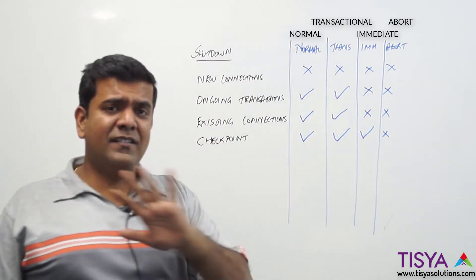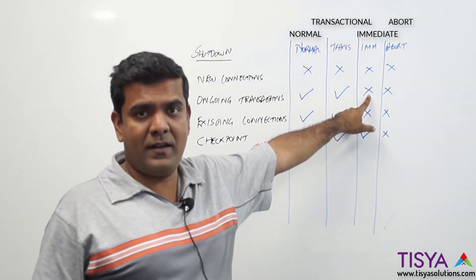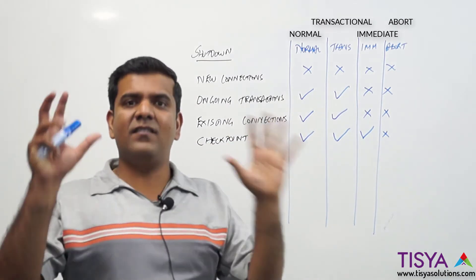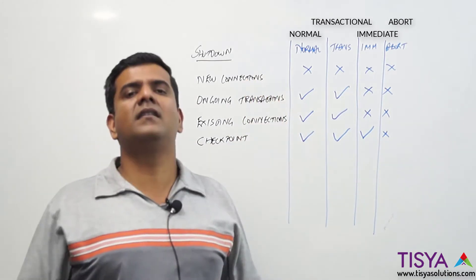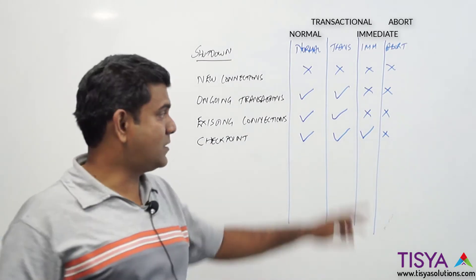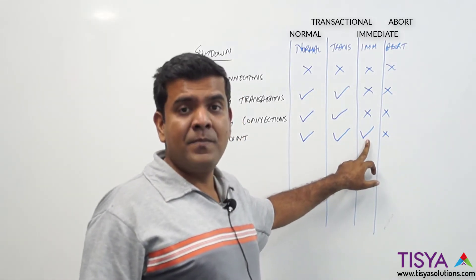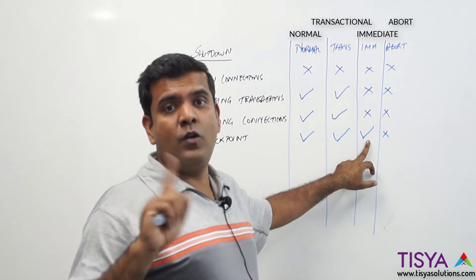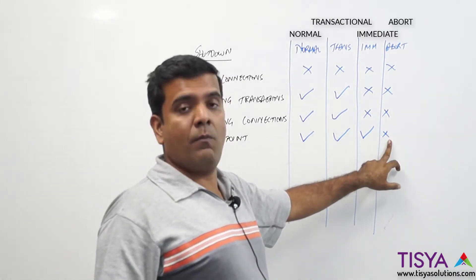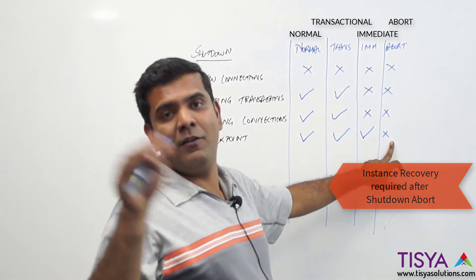With a shutdown immediate, all existing sessions and transactions are terminated, but whatever changes are in the buffer cache are written down into the data files for committed transactions. So if you do a shutdown immediate, when you start up again there is no need to perform instance recovery.